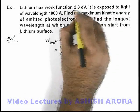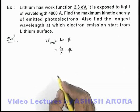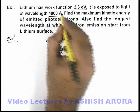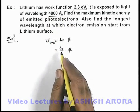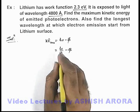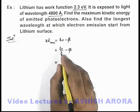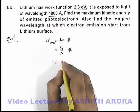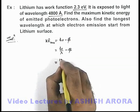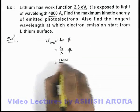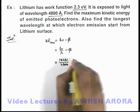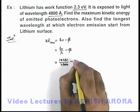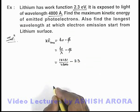Here we are given that the work function is 2.3 electron volts and the wavelength is 4800 angstroms. For wavelength 4800 angstroms, the energy can be written as 12431 by 4800 in angstroms minus the work function 2.3 electron volts.